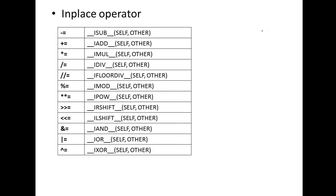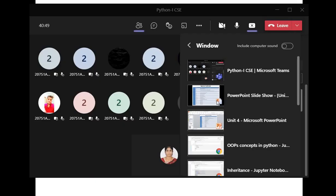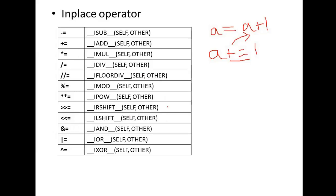Then we have in-place operators — the shorthand operators. Whenever you want to write A equals A plus 1, you can also write it as A plus equals 1. This is called the in-place operator. So minus equals is in-place subtraction, plus equals is in-place addition, and we also have in-place multiplication. Similarly we have in-place division, in-place floor division, in-place mod, in-place power, in-place right shift, left shift, AND, OR, and XOR. These are all the in-place operators.